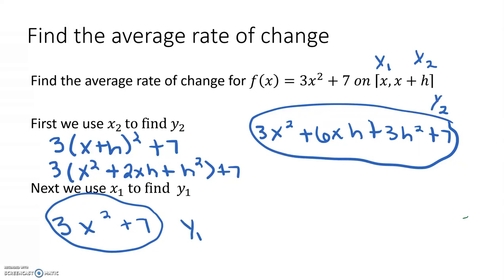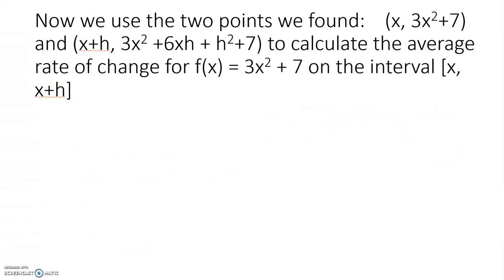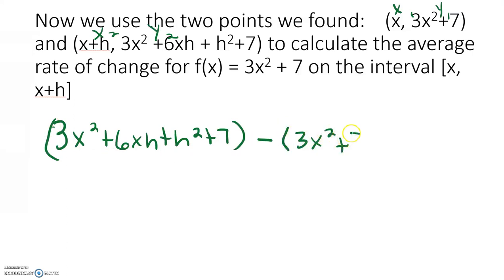Now that we have our two points, we can substitute them into the formula to find the average rate of change. So we are given (x₁, y₁), (x₂, y₂). So we have 3x² plus 6xh plus 3h² plus 7, y₂, minus y₁, 3x² plus 7, all over x plus h minus x.